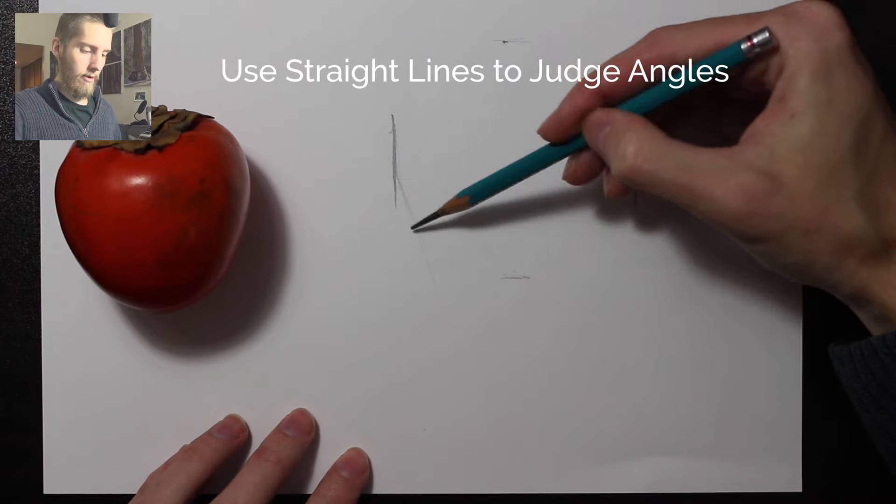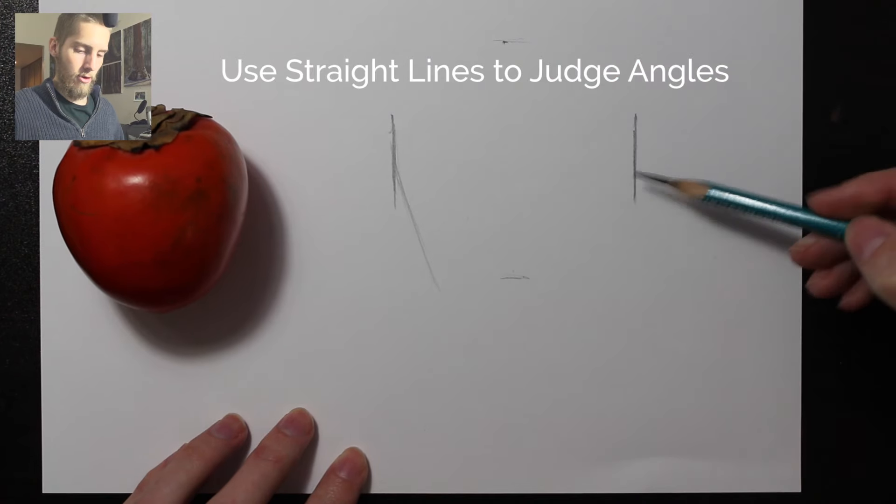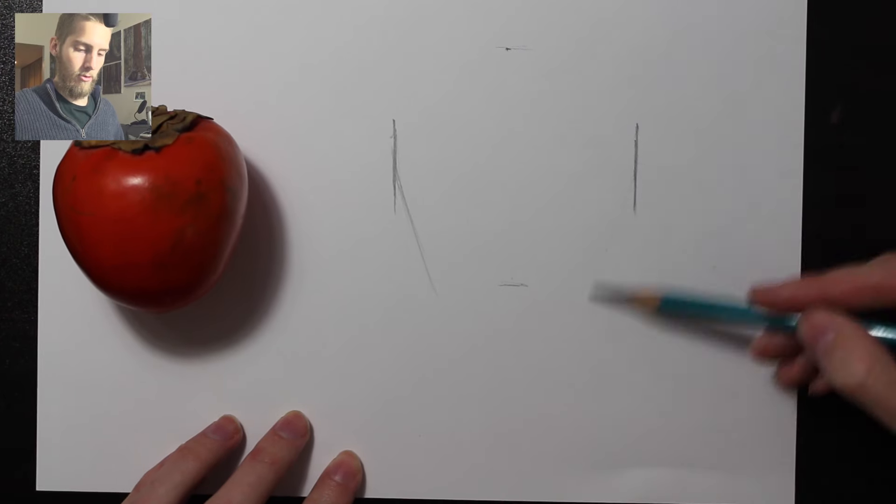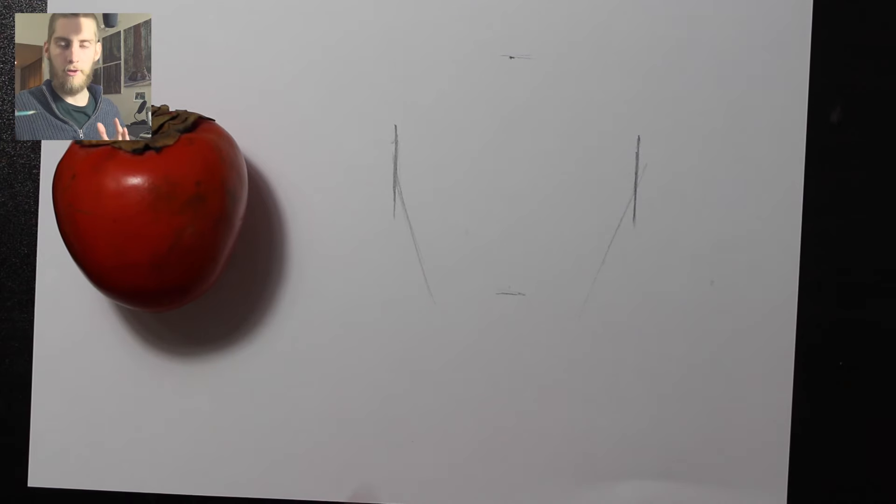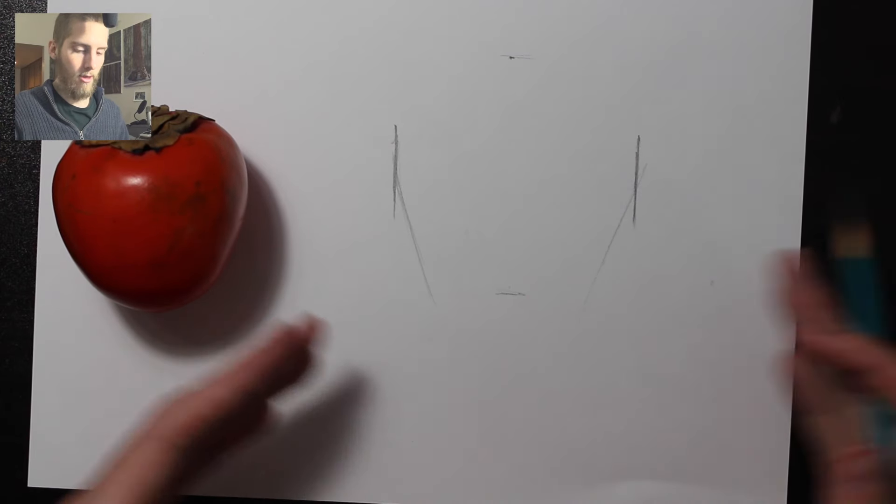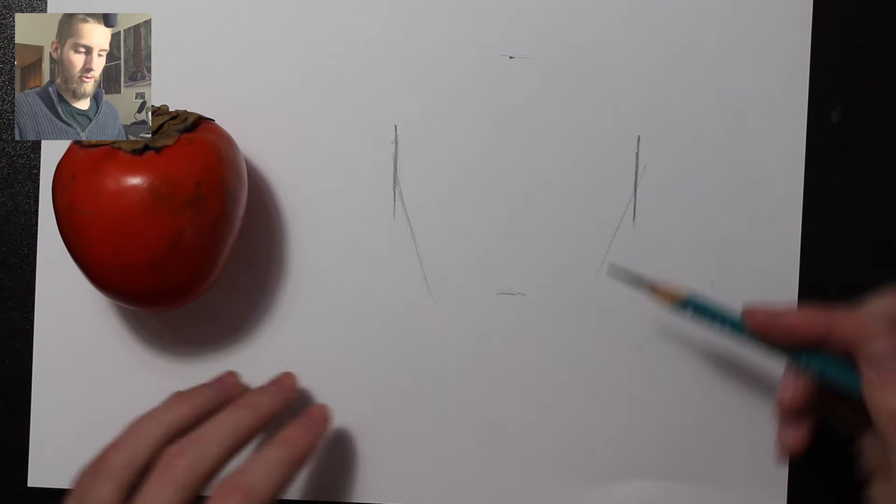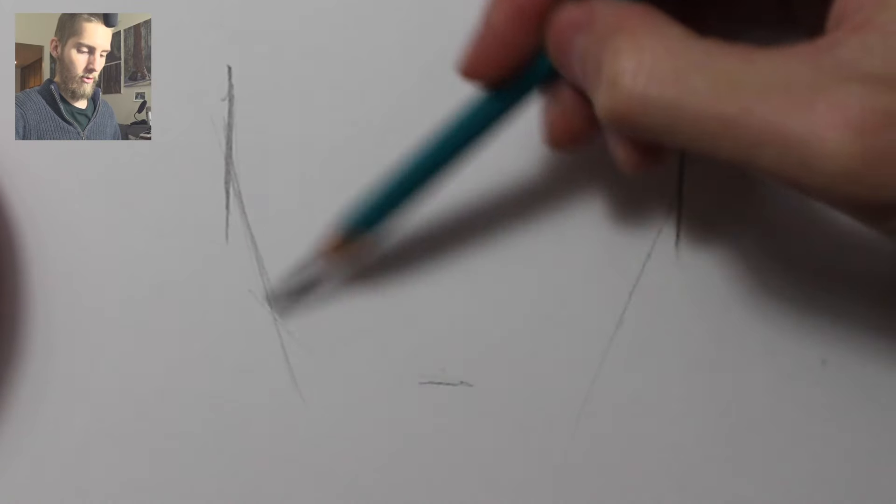So I can start at the outside here and just start guesstimating some of these angles. I'm going to do this very quickly because I'm just demonstrating some concepts. This isn't a tutorial video for drawing a persimmon. This is just showing the concepts for how I would block this persimmon in.